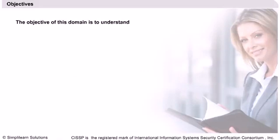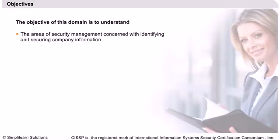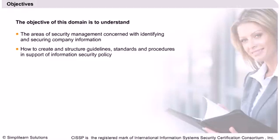The objective of ISC2 for this domain is that the CISSP candidate is expected to understand the areas of security management concerned with identifying and securing company information, which basically includes planning, organization and roles of individuals in identifying and securing an organization's information assets. He is also expected to understand how to create and structure guidelines, standards and procedures in support of information security policy.